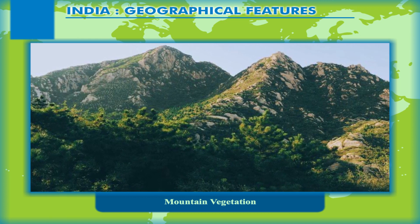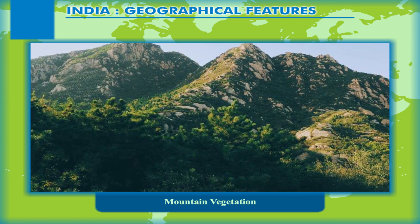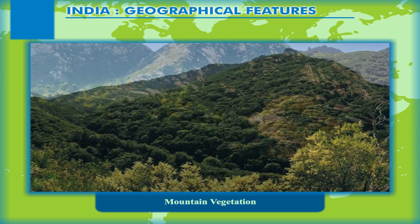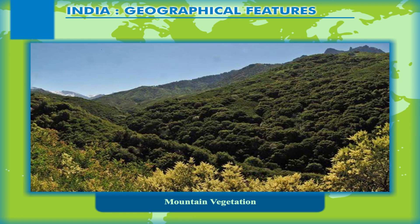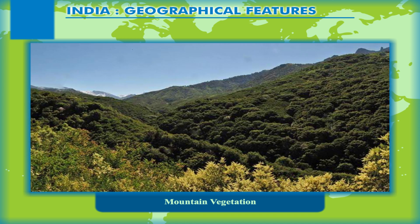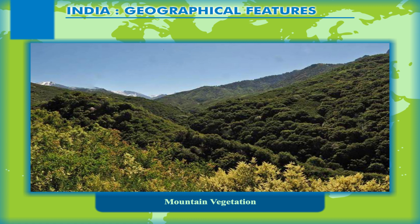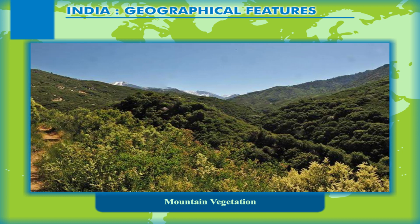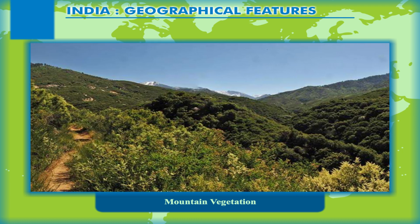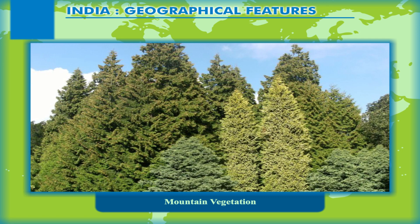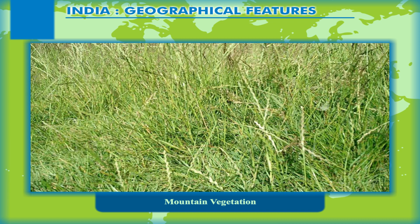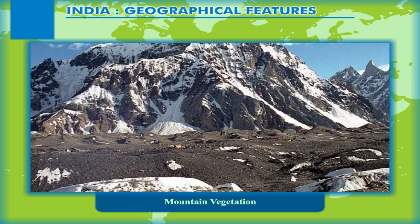Mountain Vegetation. Several types of vegetation cover are found over the mountain belt stretching across the northern border of India to the Himalayas, from Jammu and Kashmir up to the eastern Himalayas. Such vegetation is also found in other mountainous regions of the country. The vegetation changes with altitude. The lower altitude region from the foothills upward has deciduous forests. As altitude increases, these are replaced by subtropical vegetation, then coniferous trees, small shrubs, and grasses, and finally the vegetation cover gives way to the snow field.